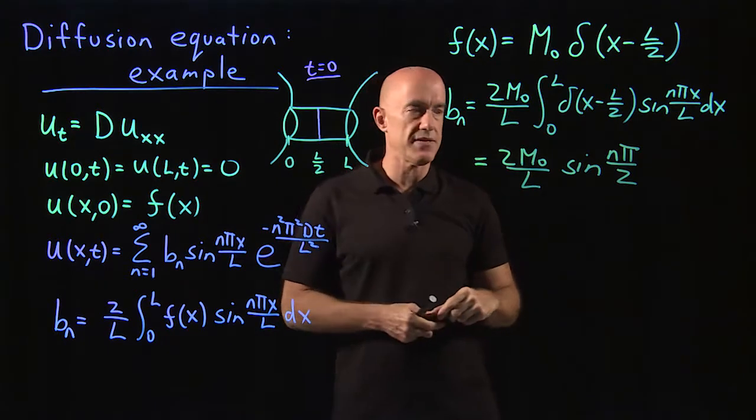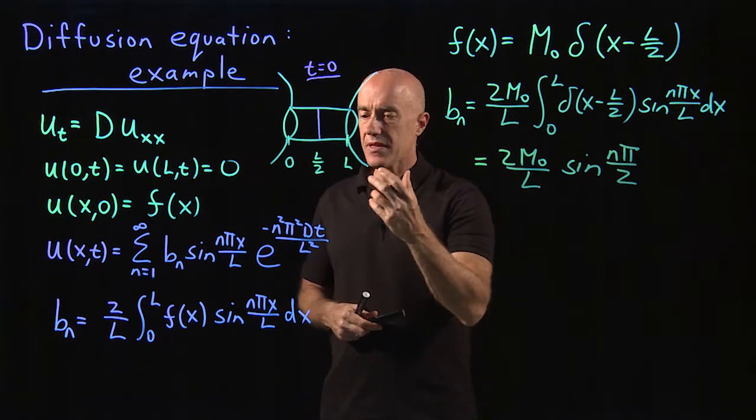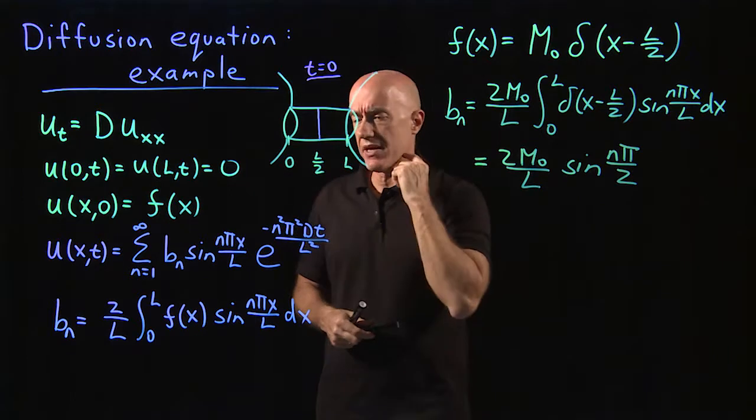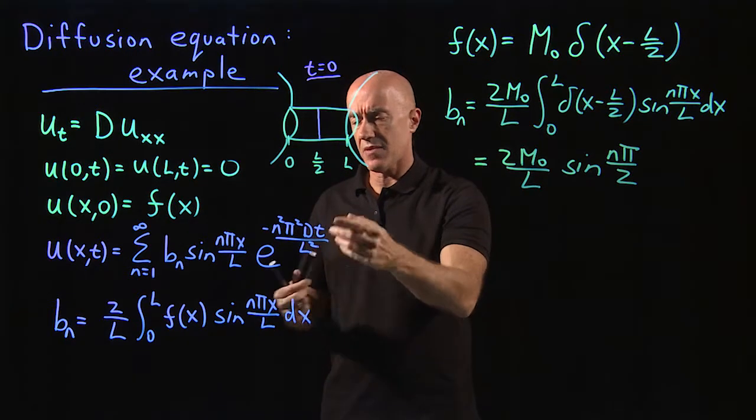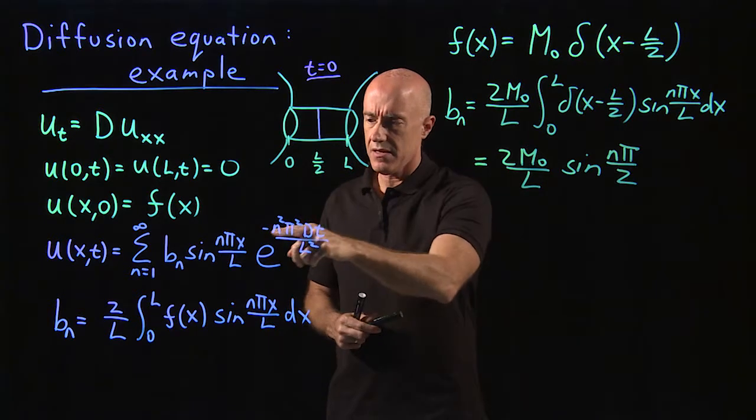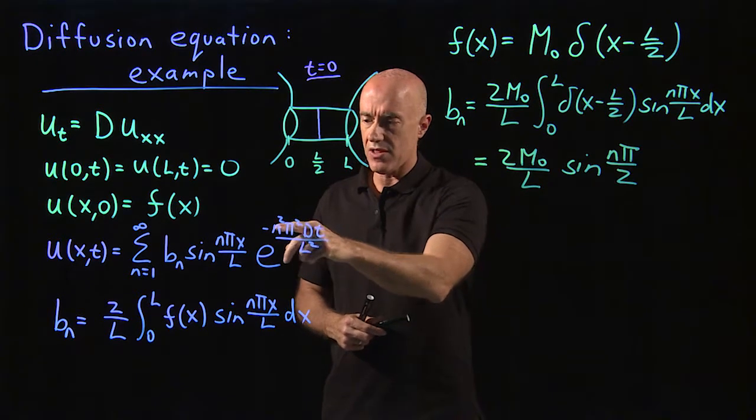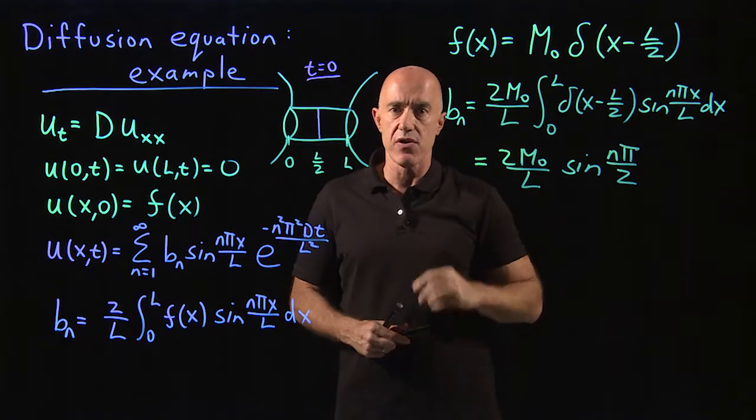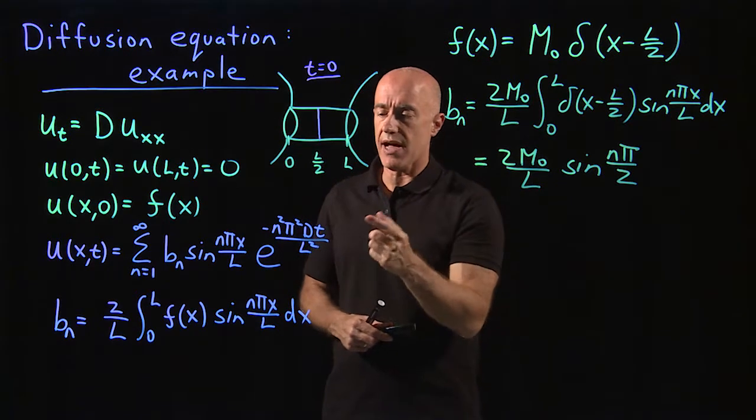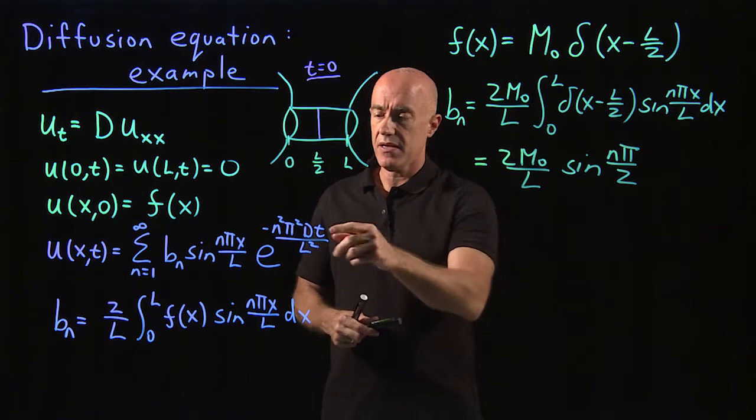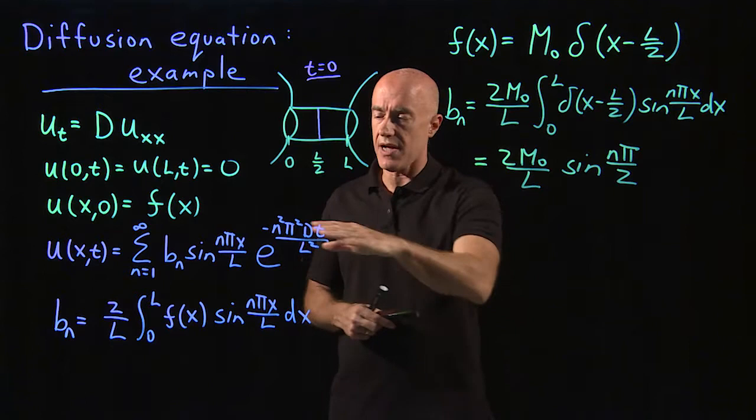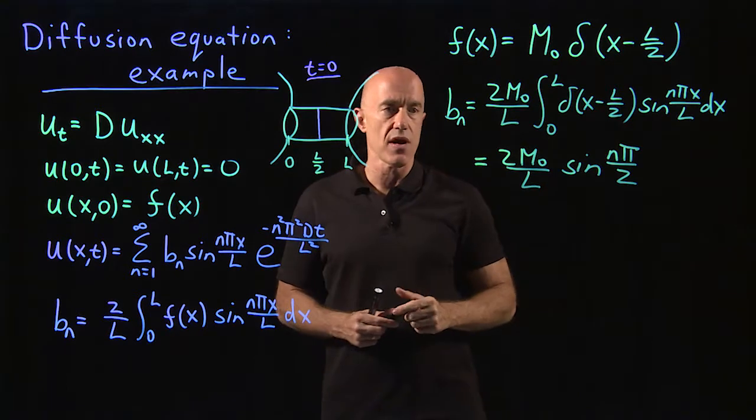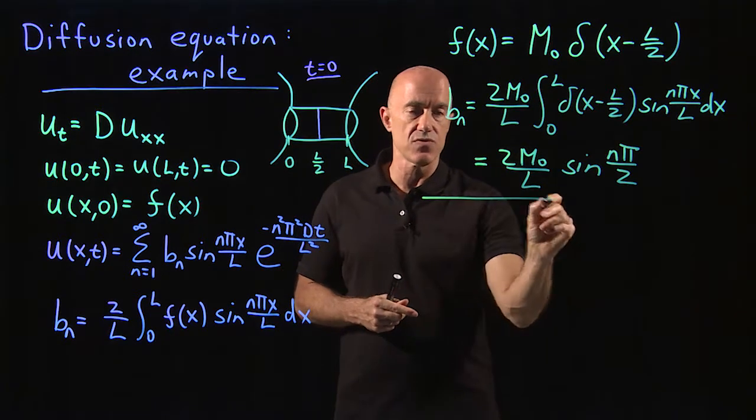If we're just interested in the longer time behavior, longer time here means that T is somewhat larger than L squared over D. Because this exponential function when n is larger than one will cause the terms to go to zero very fast. So the diffusion time is defined as L squared over D. So if T is larger than that diffusion time, the most important term in this sum will correspond to n equals one. So let's just look at the n equals one term.